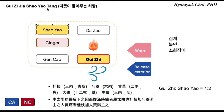Gui-ji-jia-xiao-yao — 'jia' means added. So this is gui-ji-tang with added xiao-yao. The amount of xiao-yao is doubled, so xiao-yao is two and gui-ji is one.